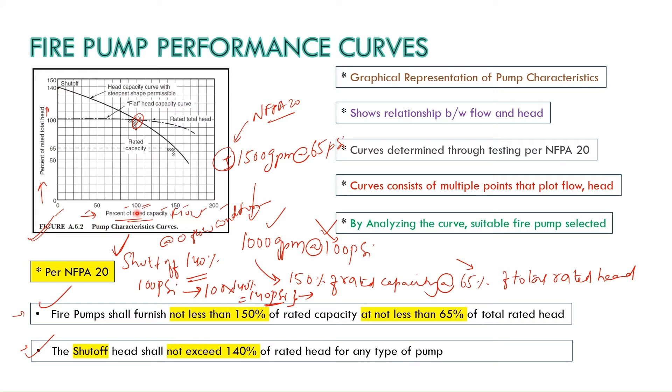So here based on our two points they have shown the curve here. Here you can see the 100% of the rated capacity. For example we have 1000 GPM and it is providing 100% of the total head which is 100 PSI, this will be the point. And second thing is this pump shall produce 150% of the rated capacity. So when you come to here 150% of this one, 150% will be 1500 GPM. So here on y-axis you can see 65% of the total rated head and the shutoff pressure at zero flow condition shall not exceed 140%.